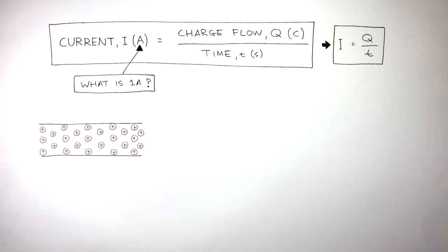Here is a diagram of a close-up of a metal wire. The red circles with crosses represent the positive ions in their regular lattice structure, and the blue e's with arrows represent the electrons flowing in one direction. This is the electric current.